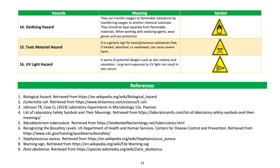Oxidizing hazard: oxidizing agents can transfer oxygen to flammable substances; they should be kept separate from flammable materials; when working with oxidizing agents, wear gloves and eye protection. Toxic material hazard: a generic sign for toxic or poisonous substances that, if inhaled, absorbed, or swallowed, can cause severe harm. UV light hazard: warns of potential dangers such as skin redness and ulceration; long-term exposure to UV light can result in skin cancer.